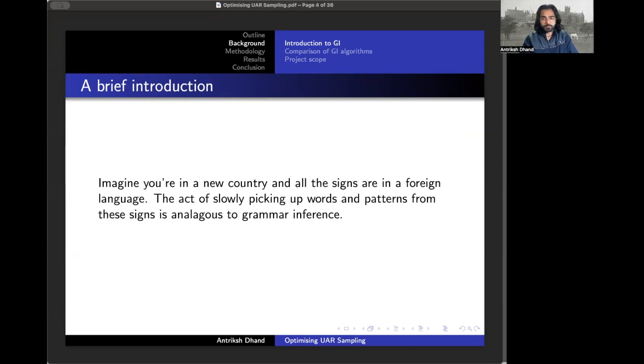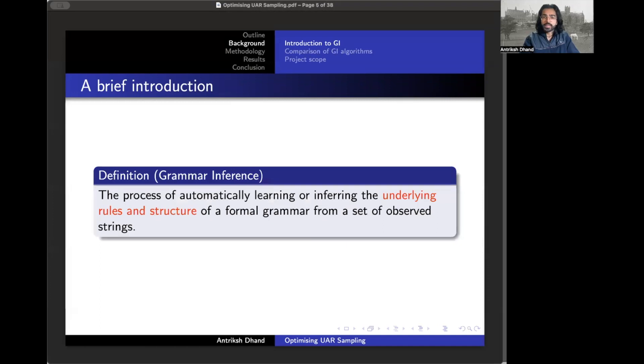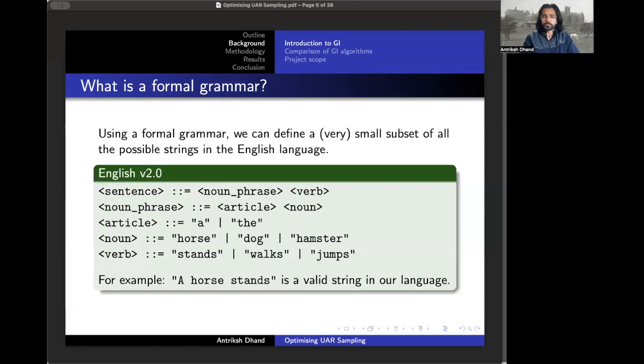What is grammar inference? Very simply put, it's the act of learning bits and pieces about a new language through repeated observation. It's similar to how after spending some time in a foreign country, you start to infer the meaning of certain signs based on where you keep seeing them. More formally, grammar inference is the process of automatically learning the underlying rules and structure of a formal grammar from a set of observed strings. A formal grammar is just a tool that we use in linguistics to help define a language, or more specifically, what strings are in a language and what strings aren't.